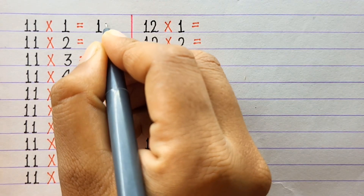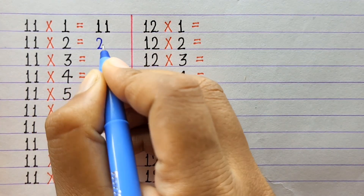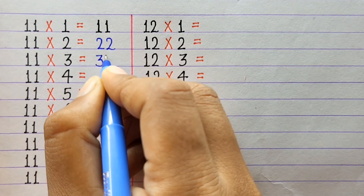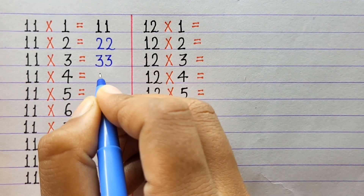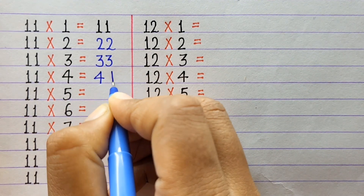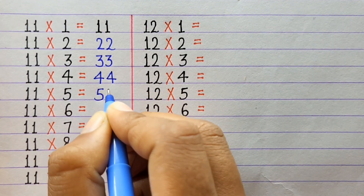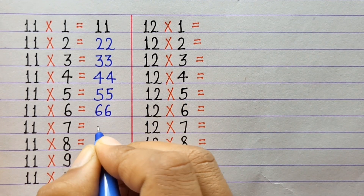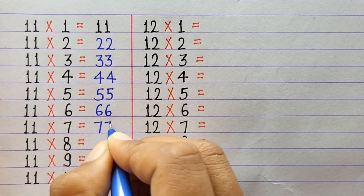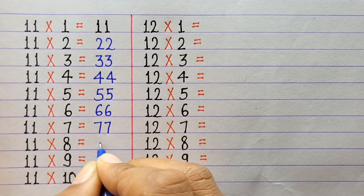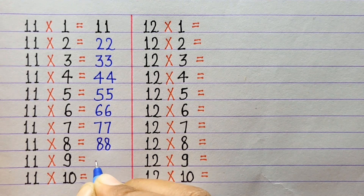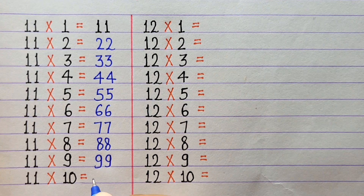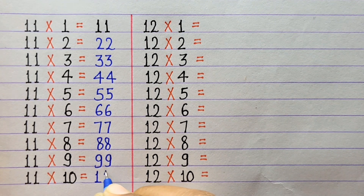11×1=11, 11×2=22, 11×3=33, 11×4=44, 11×5=55, 11×6=66, 11×7=77, 11×8=88, 11×9=99, 11×10=110.